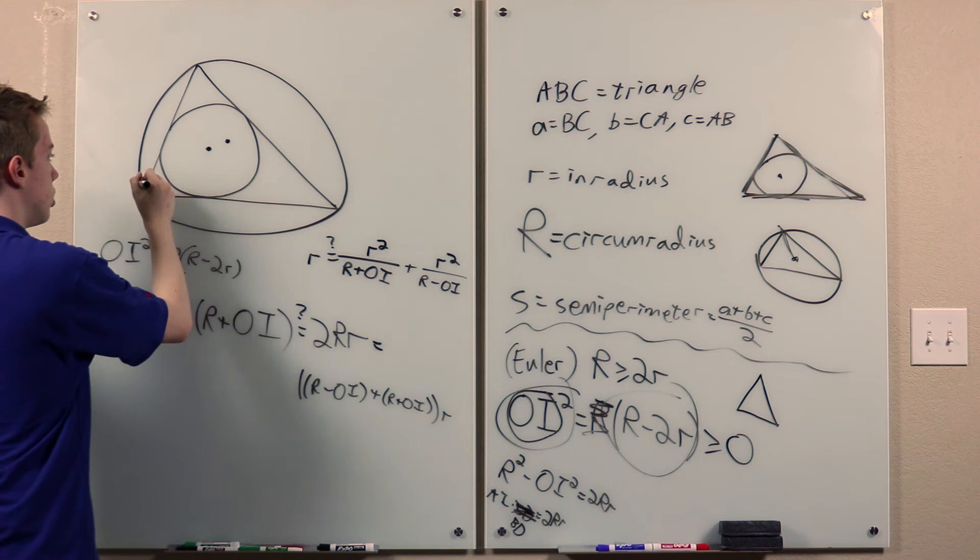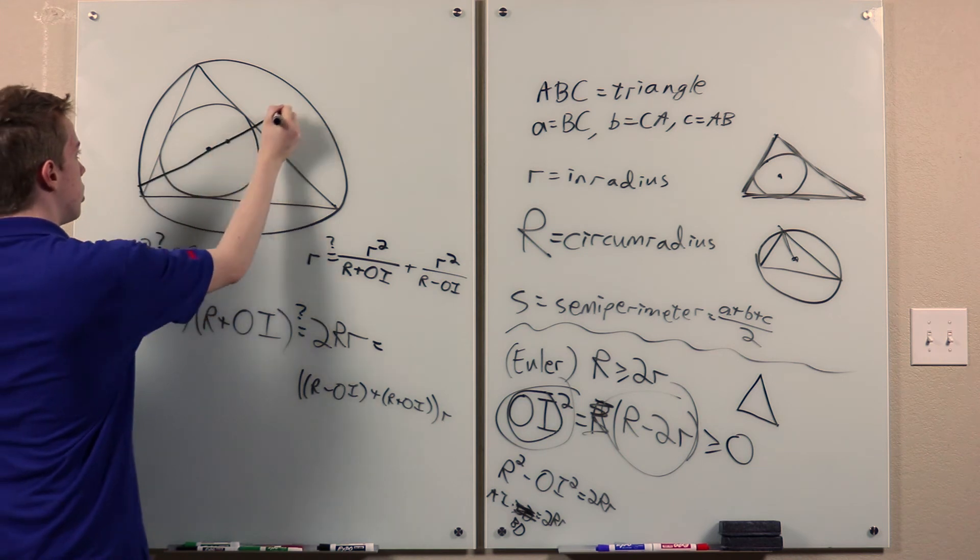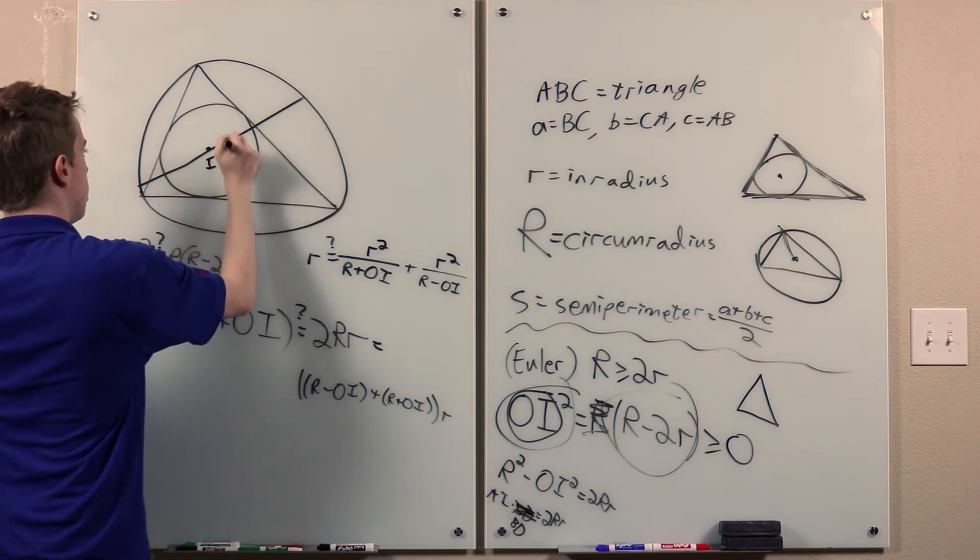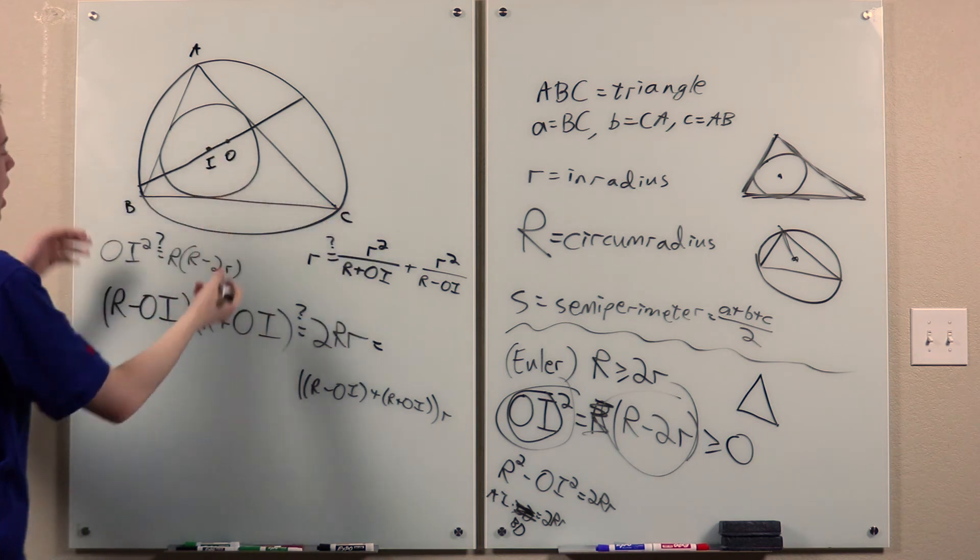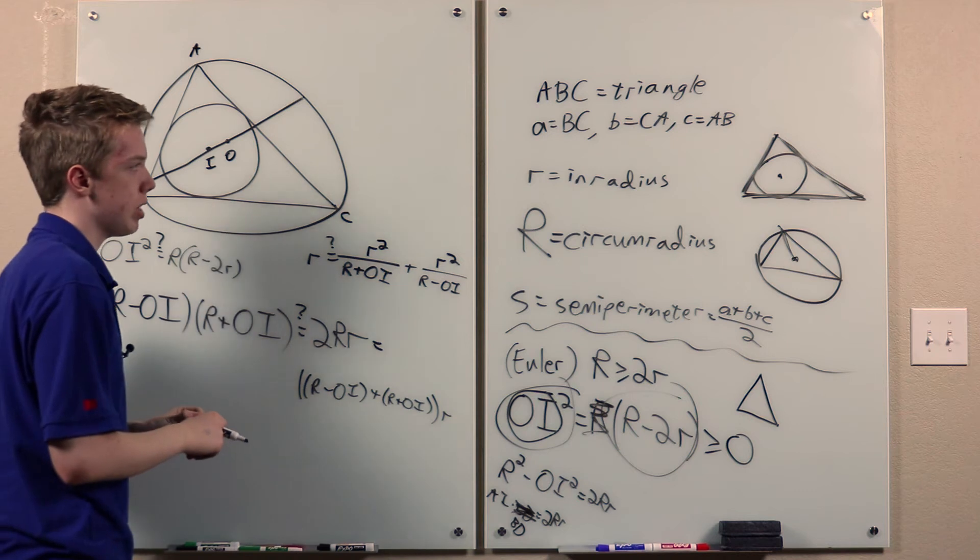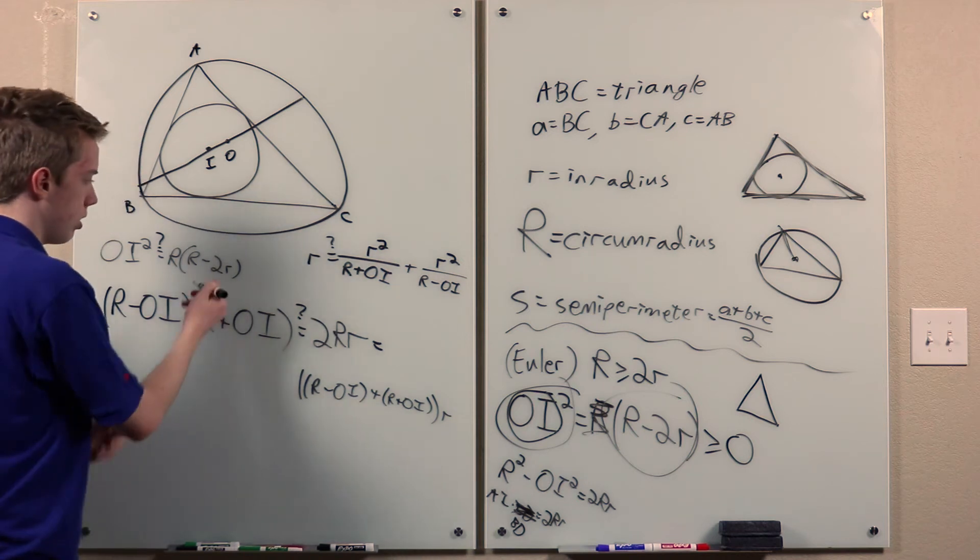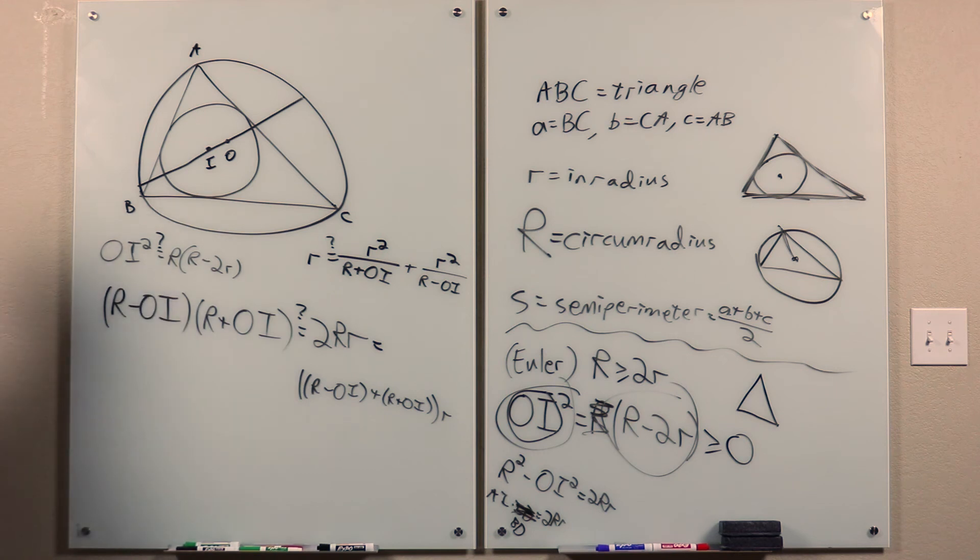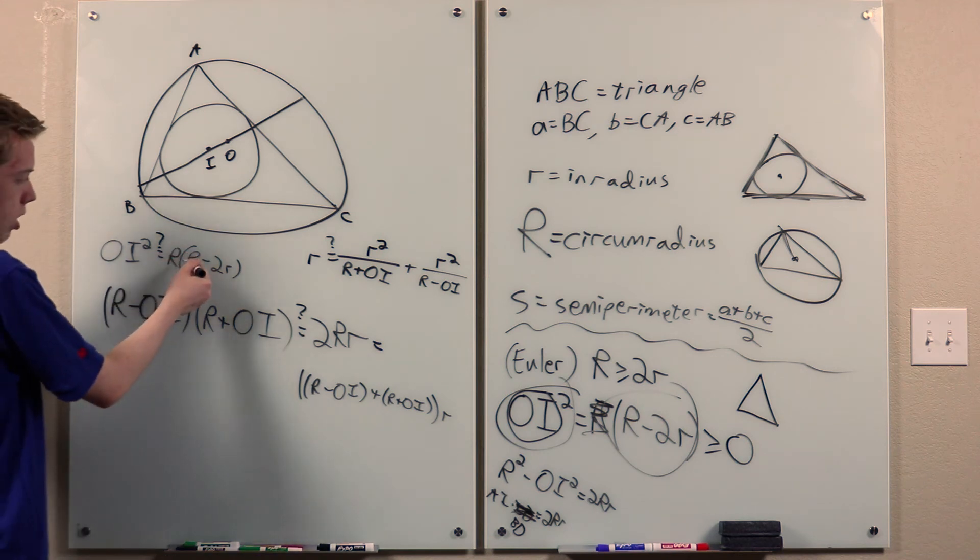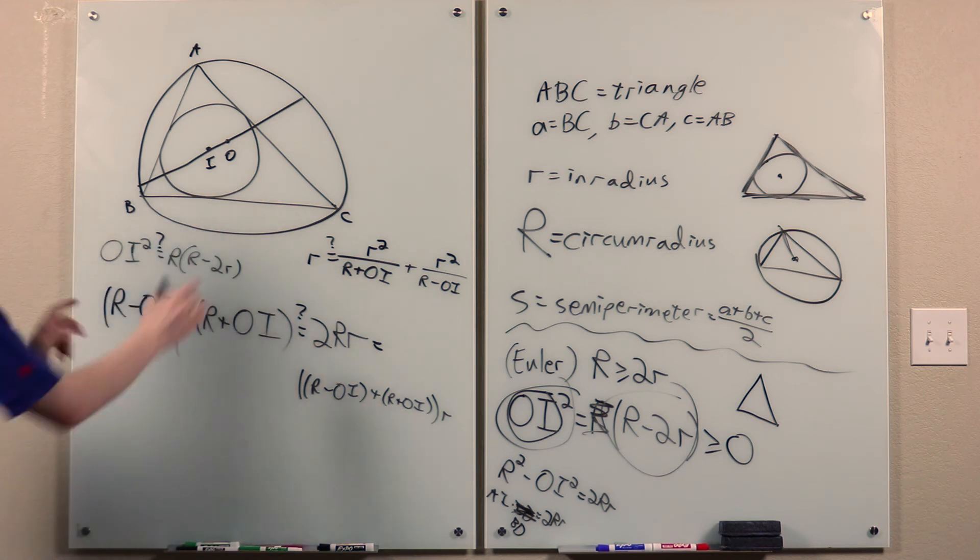This suggests inversion about the incircle. If O equals I, then the triangle must be equilateral. And then it's easily computable that big R equals 2 little r. So this is trivial. So let's assume that these are two different points.